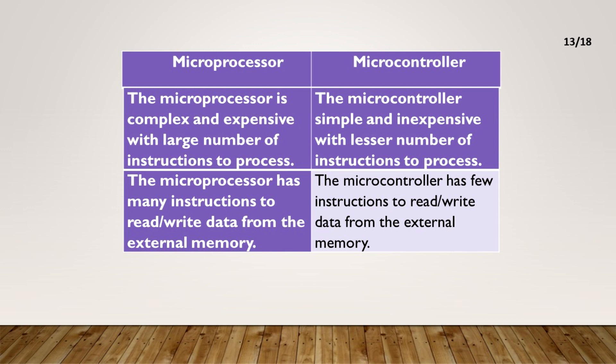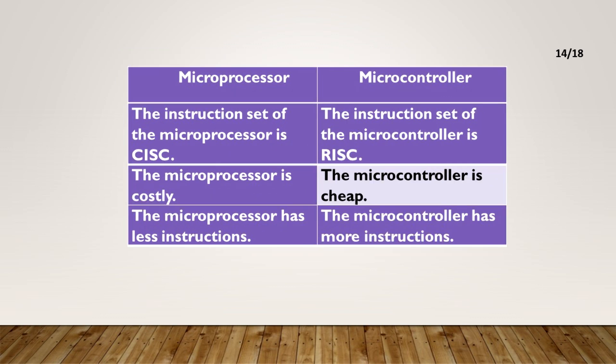The microprocessor is complex and expensive with a large number of instructions to process. The microcontroller is simple and inexpensive with fewer instructions to process. The microprocessor has many instructions to read or write data from external memory. The microcontroller has few such instructions. The instruction set of the microprocessor is CISC. The instruction set of the microcontroller is RISC.